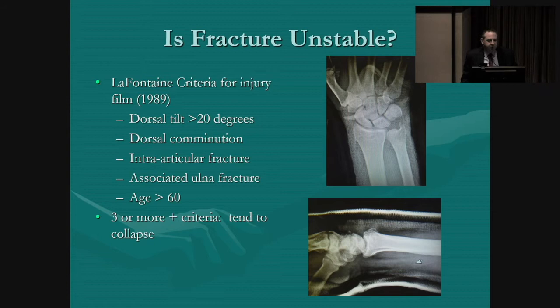Stability is a little difficult to define, but the stability of distal radius fractures was investigated in a classic article by LaFontaine in 1989. There are five factors that were considered, and if you had three or more of them, the fractures tended to collapse if they were treated in plaster.